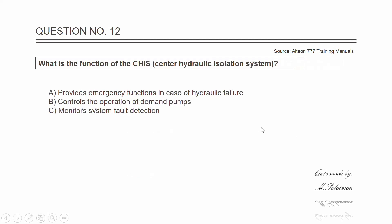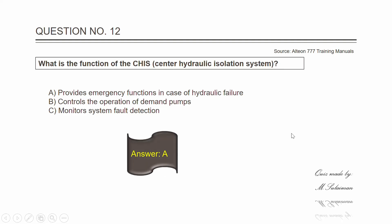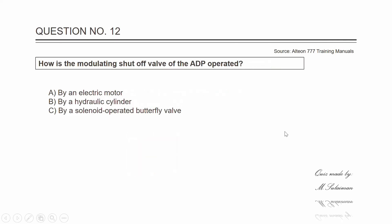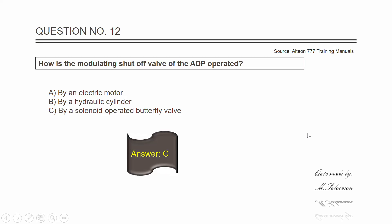Question number twelve: what is the function of the CHIS system? The answer is A — it provides emergency functions in case of hydraulic failure. Question number twelve: how is the modulating shutoff valve of the ADP operated? The answer is C — by a solenoid operated butterfly valve.